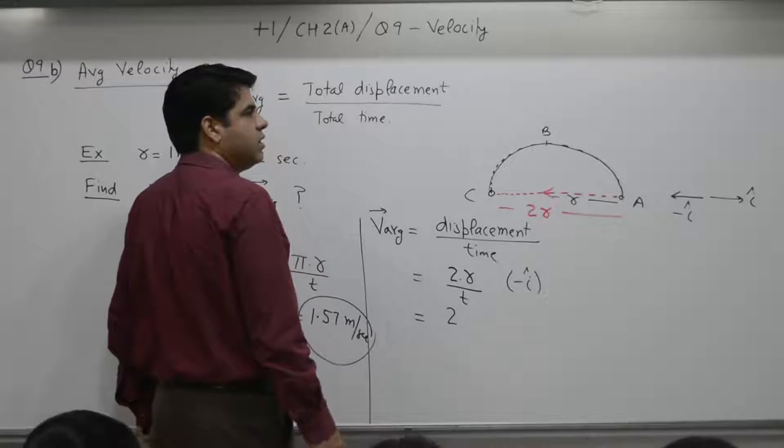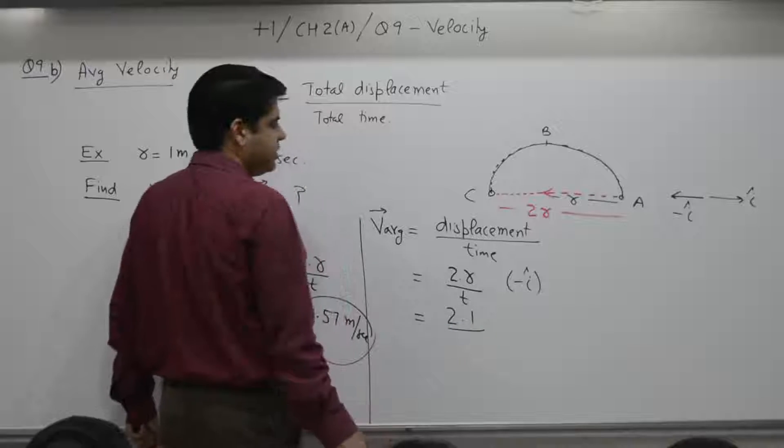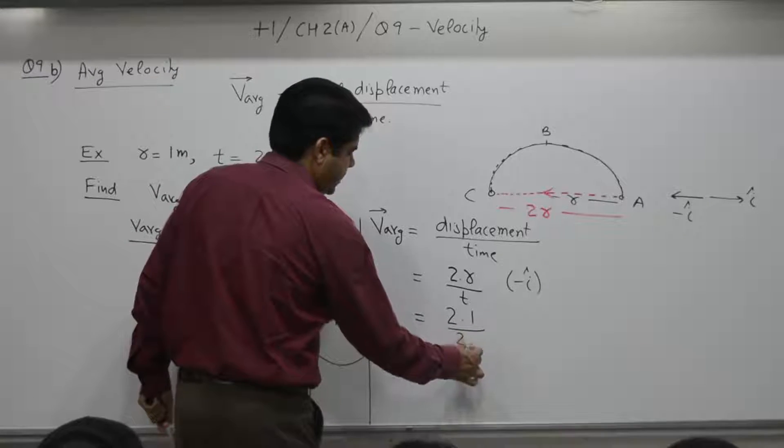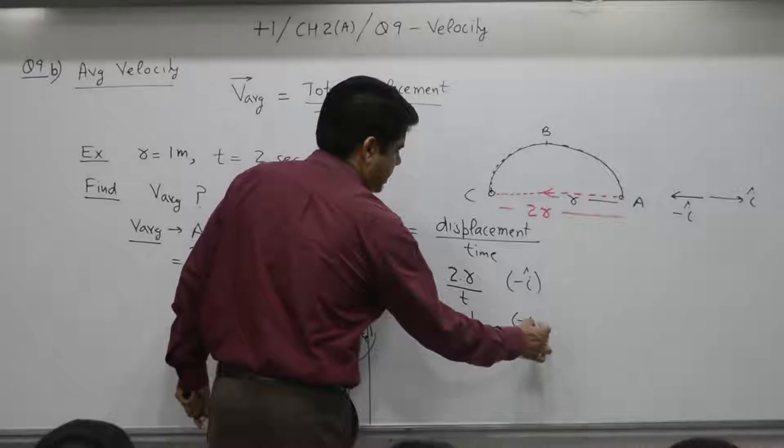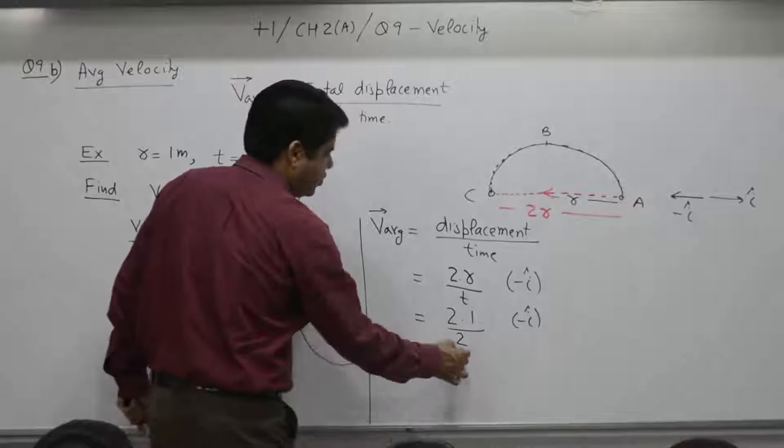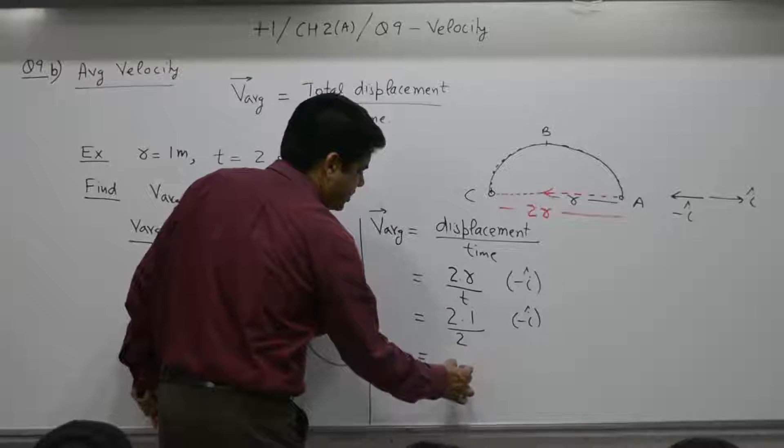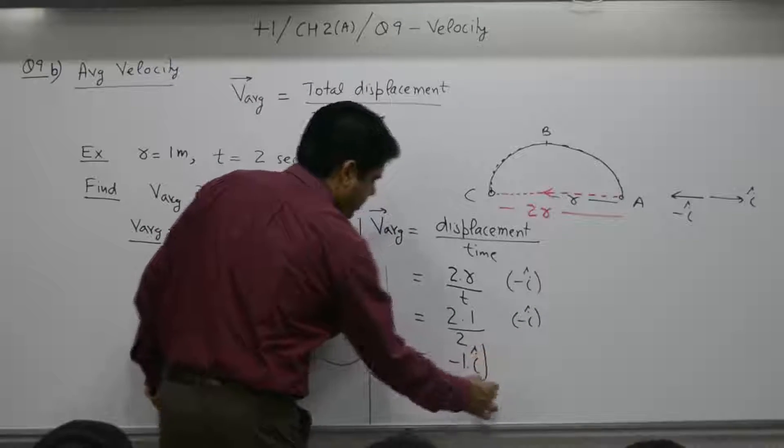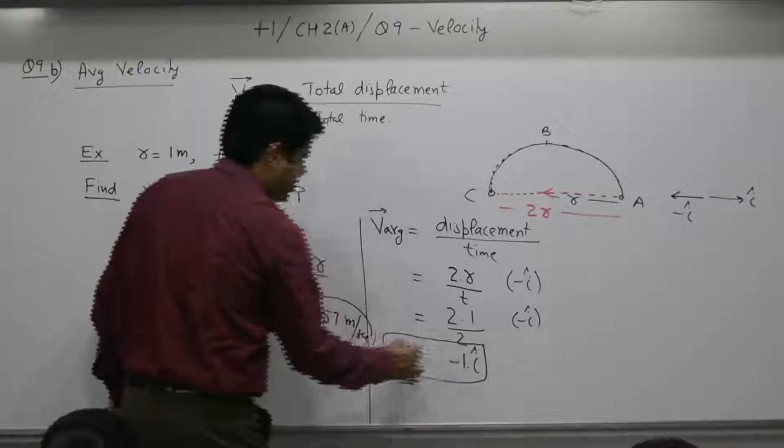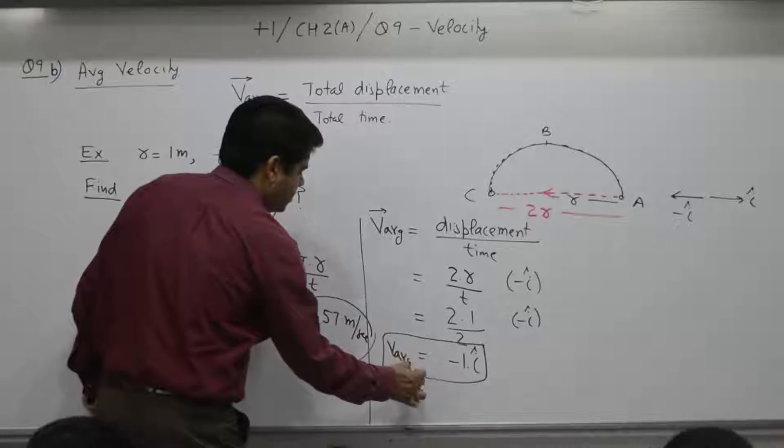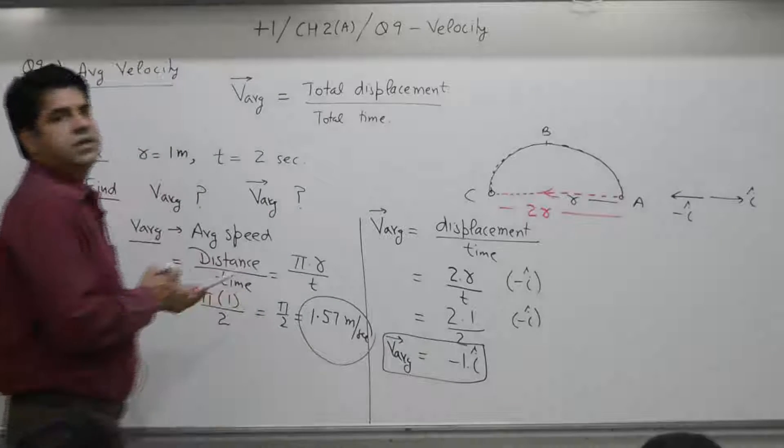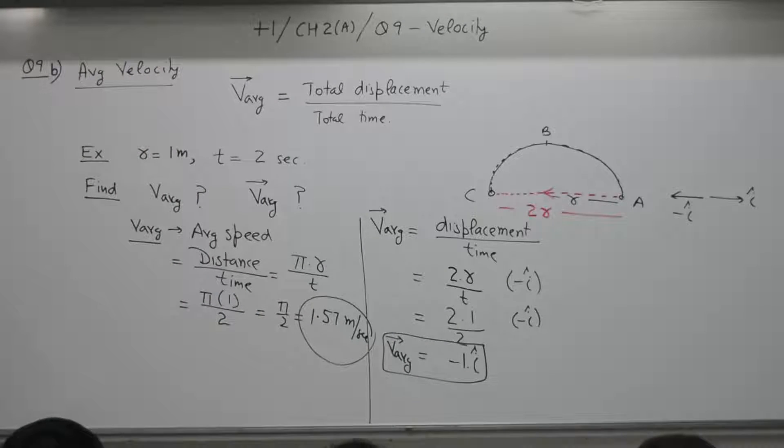2r. R is equal to what? 1. Time is how much? 2. 2 seconds. Minus i. So, 2 by 2 is 1. It is 1 into minus i, minus 1i is average velocity. It gives you both magnitude as well as direction.